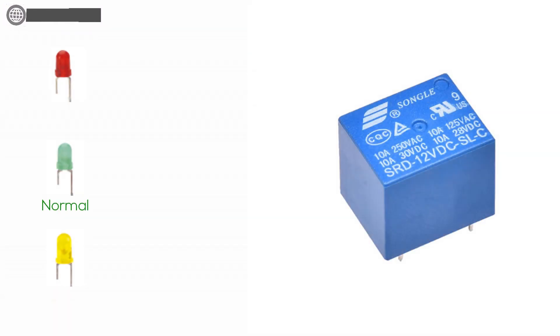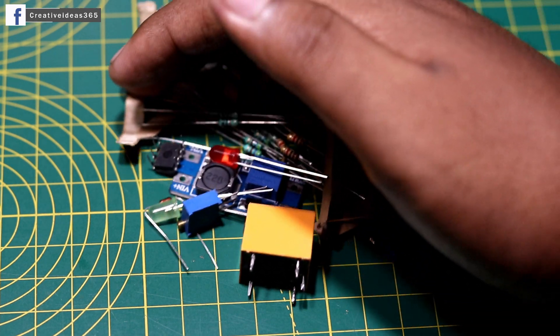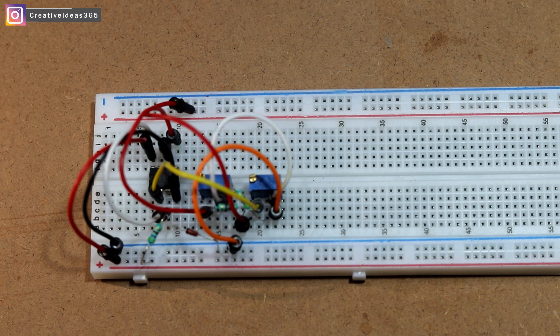A relay is connected in such a way that if the voltage is in certain limit then only the relay will be on and if the voltage is upper or lower then the relay will be off. Then I gathered all the components and made the circuit on the breadboard.